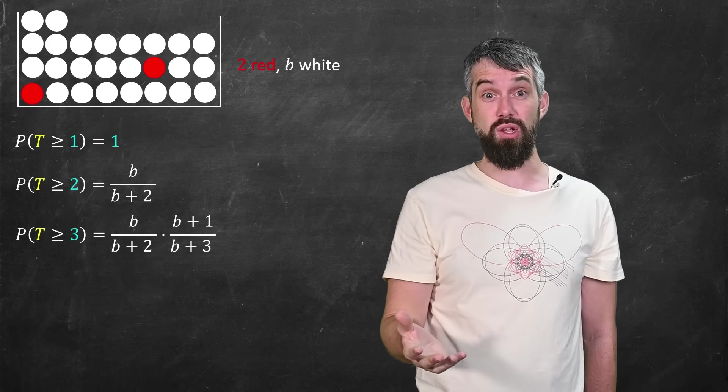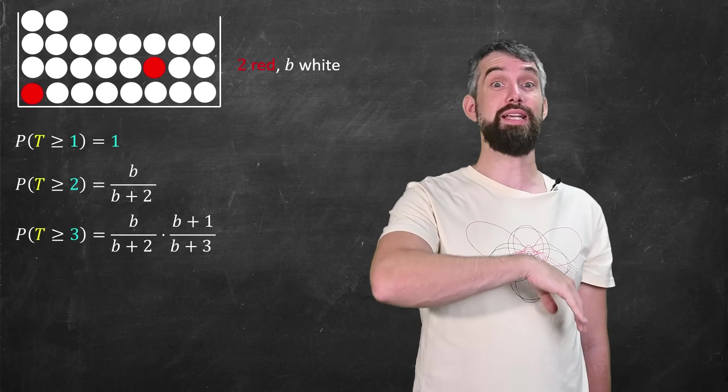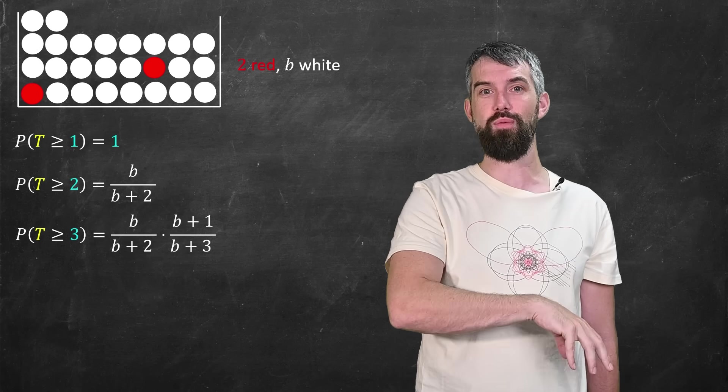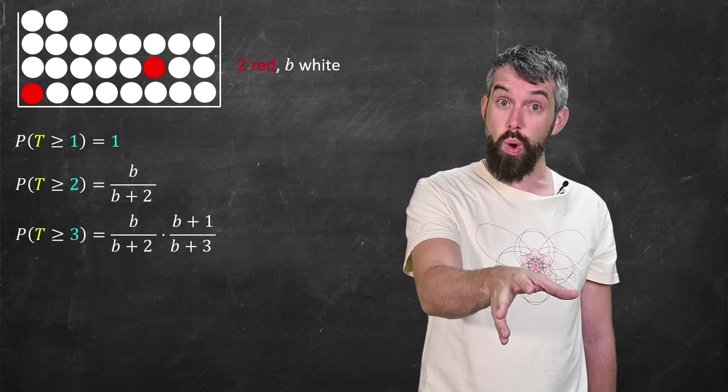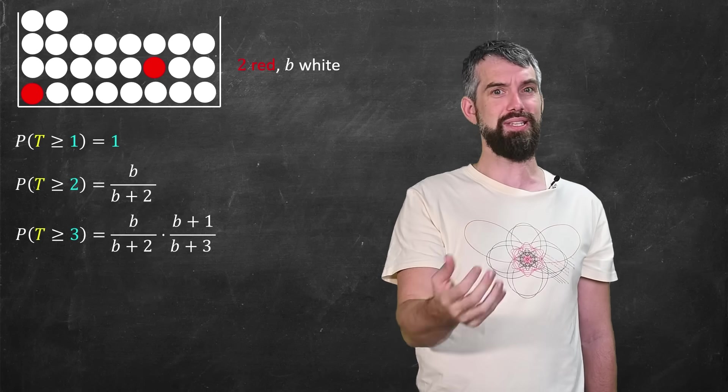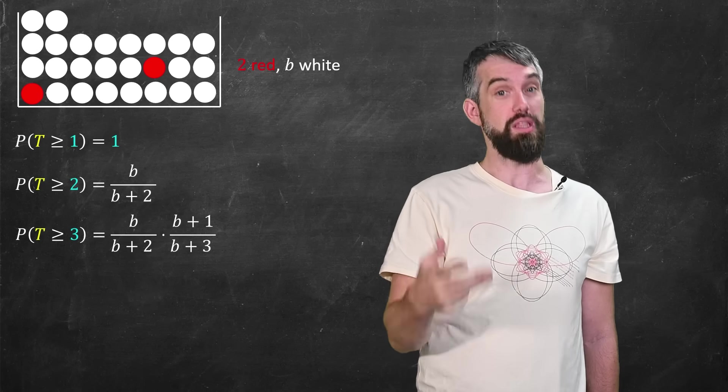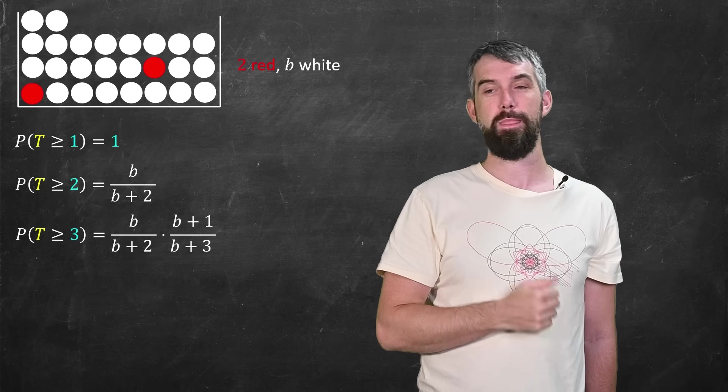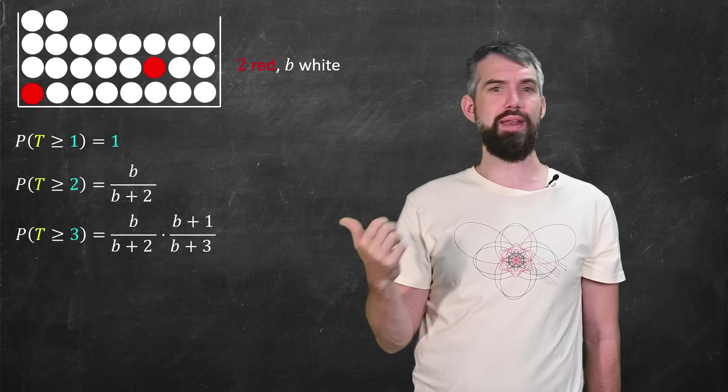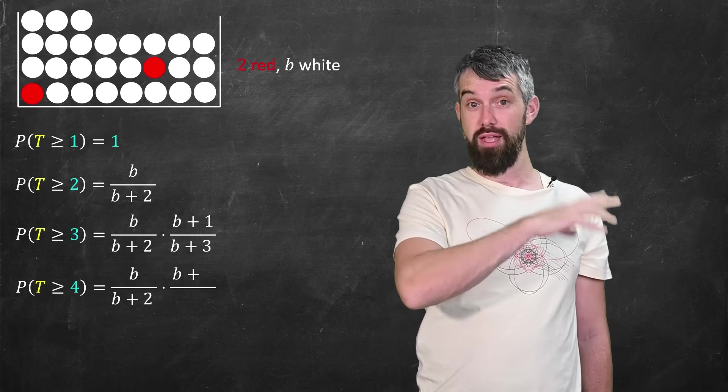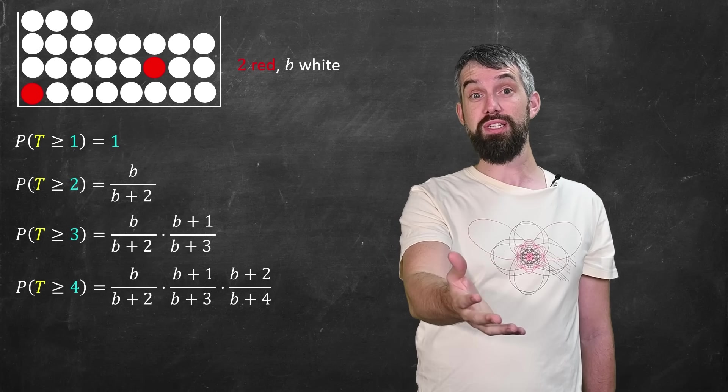And then I can continue if I want to know the probability that it takes at least three steps to get a red. I have to avoid it on that first one, so I copy that down again, and then I have to avoid it again. So now it's b plus one, there's one more white ball, over b plus three, there's one more total ball. No cancellation here.